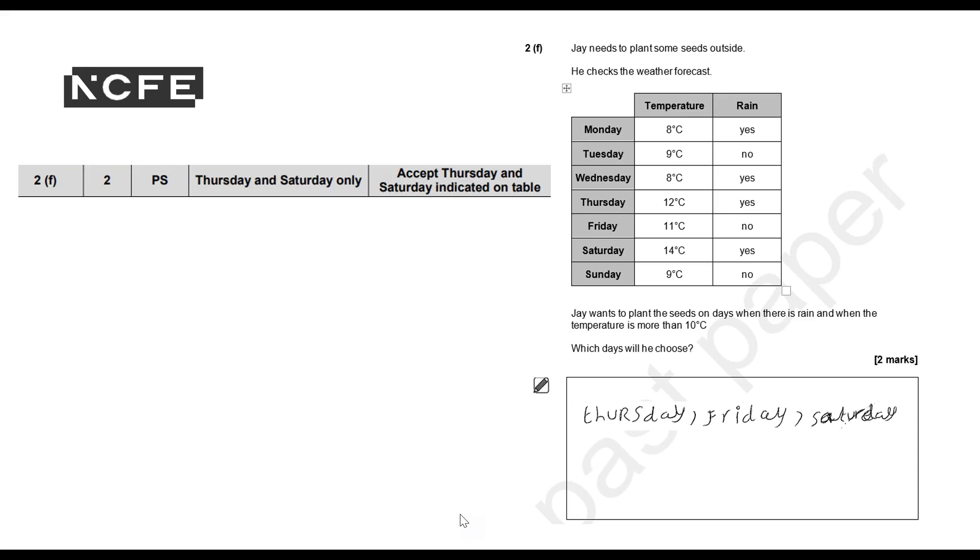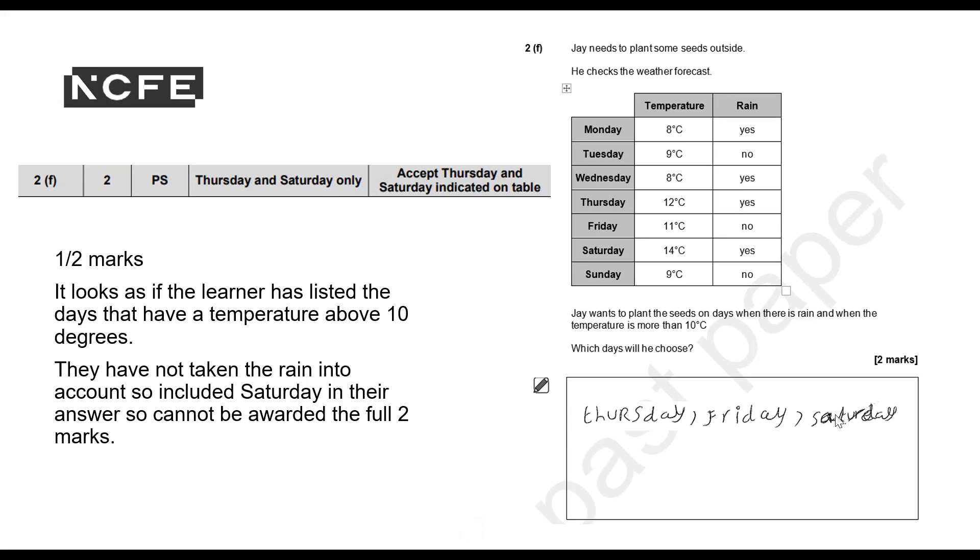It looks as if what the learner's done is they've listed all of the days that have a temperature above 10 degrees: Thursday, Friday, Saturday. But it does say when there is rain and when the temperature is more than 10 degrees Celsius. So for these three days, Friday there is no rain, so we shouldn't have seen the Friday there. Unfortunately we can't give the full marks, but we can give one out of the two marks because we can see that they have indicated the Thursday and the Saturday.